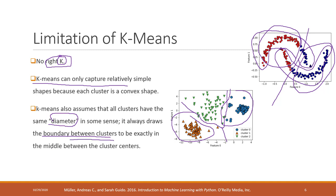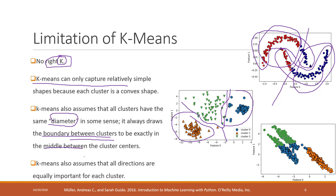Another limitation is that K-means assumes all directions are equally important. If human judgment would create elongated clusters following a directional pattern, K-means ignores that and groups data without considering direction, resulting in clusters that don't reflect the natural structure of the data.